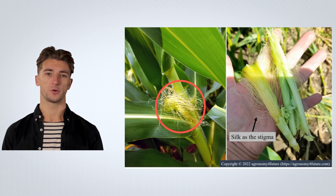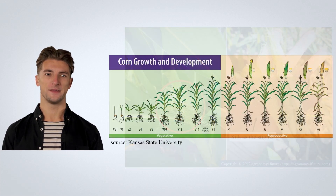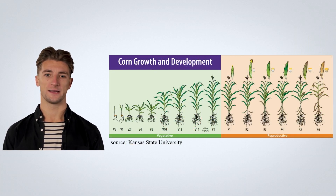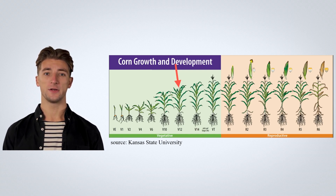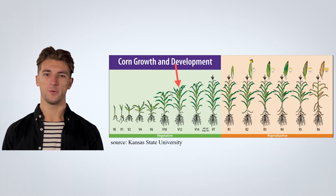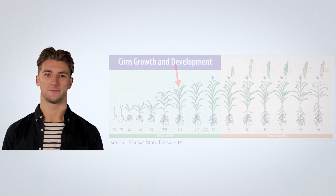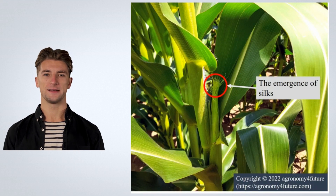Each ovule, which will be a potential kernel on the cob, develops its own silk as the stigma of the female flower. Silks start to elongate around V12, starting from the ovules near the base of the corn cob and then sequentially developing from base upward. Silking of the tip ovules are last to develop, indicating the silks from the base of the cob emerge first from the husk leaves. In other words, the first silks to emerge from the husk leaves are those attached to potential kernels near the base of the cob.